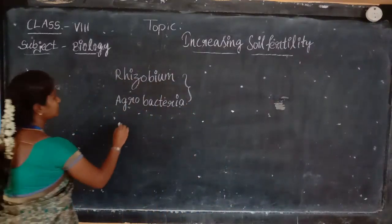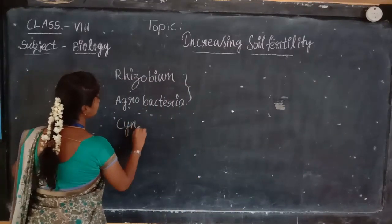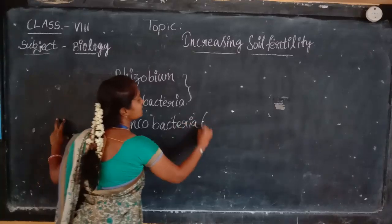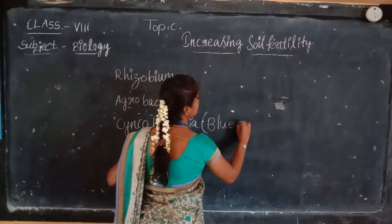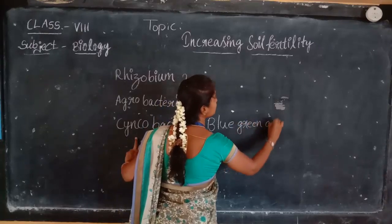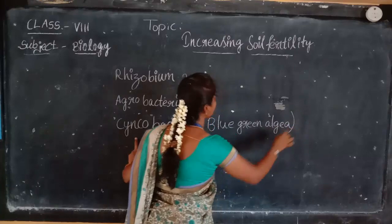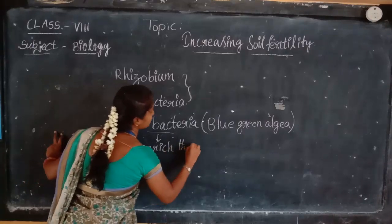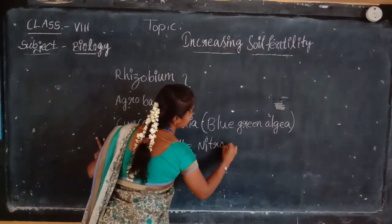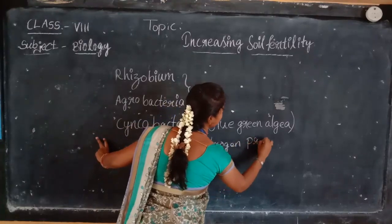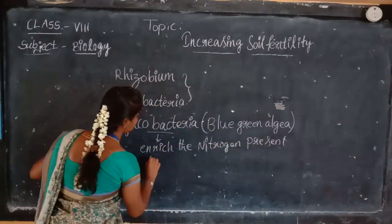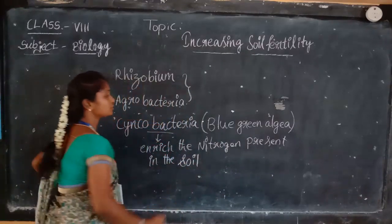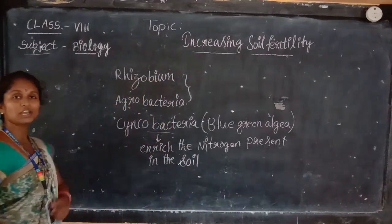One more bacteria is there — it is cyanobacteria. This is nothing but blue-green algae. This bacteria is also going to enrich the nitrogen present in the soil, and it is also going to be helpful for the plants, increasing soil fertility.